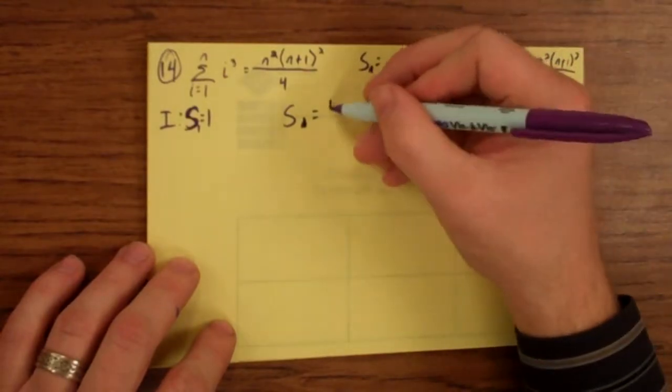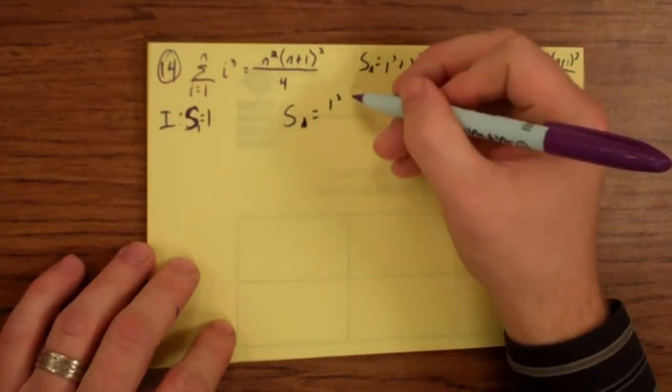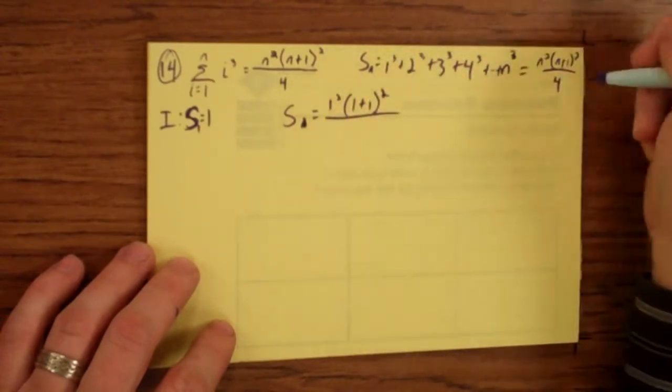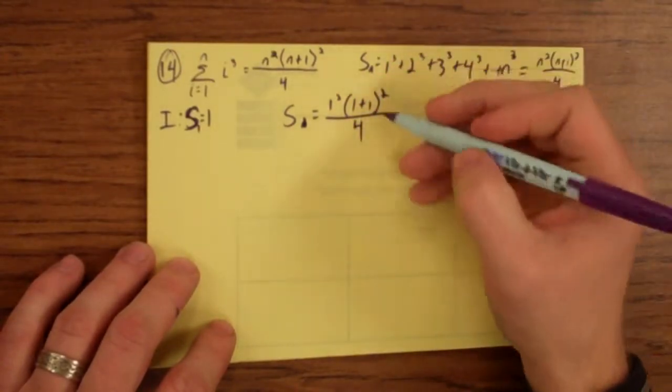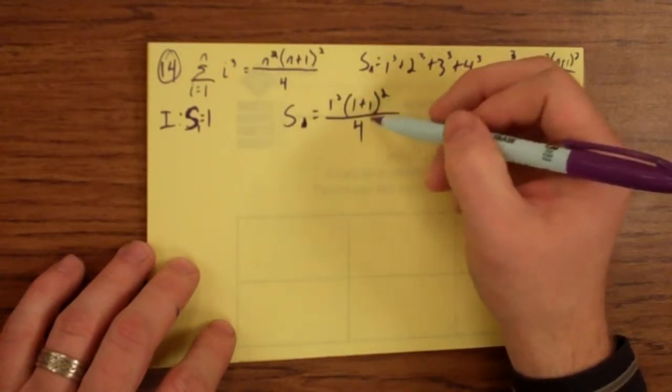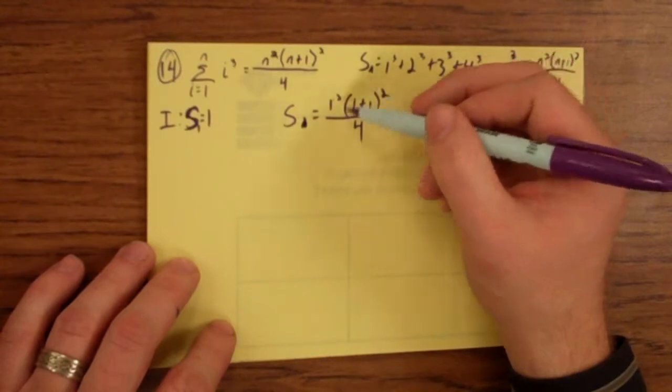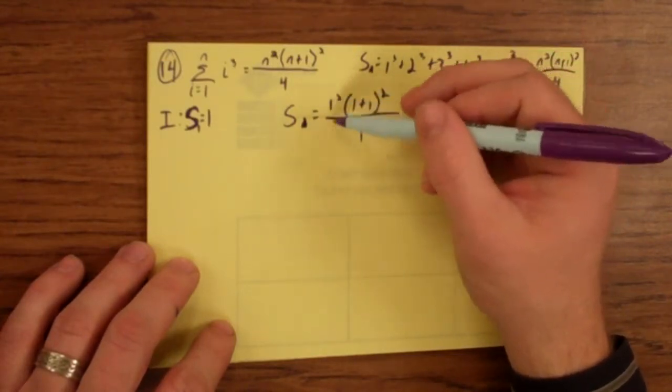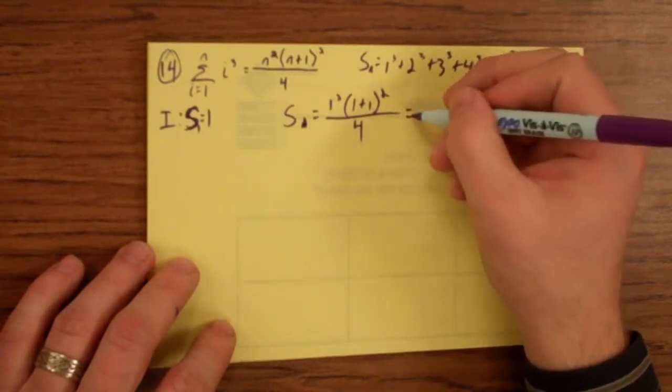I'm going to put a 1 in here. 1 squared times 1 plus 1 squared over 4. Well, this is 1 times, 1 plus 1 is 2, 2 squared is 4. 4 times 1 is 4. 4 divided by 4 is 1.